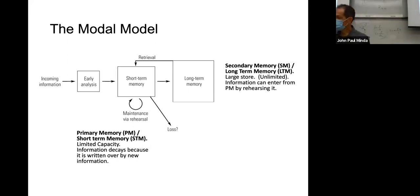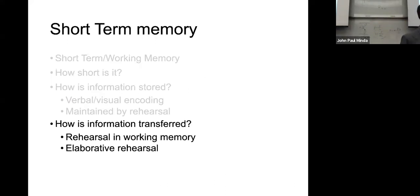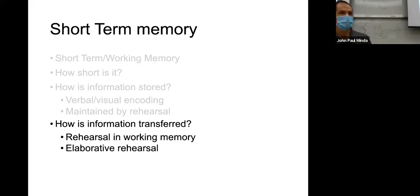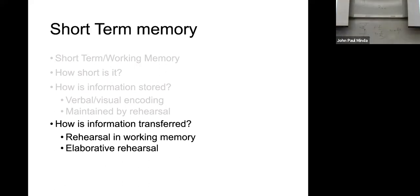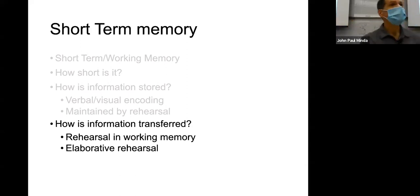So let's talk about how you can rehearse information — how information is transferred from your working memory or short-term memory into long-term storage. There are two ways we're going to discuss today. One is rehearsal in working memory, or what we'll call maintenance rehearsal. That's the inner voice we talked about last week — being able to repeat a series of numbers, words, or chunks of information over and over again like a loop until you need to use it. Often the information is not remembered, or if you rehearse it enough, it is remembered long enough to use.